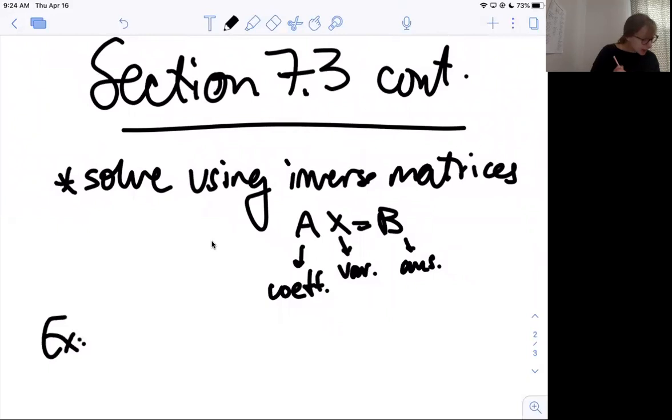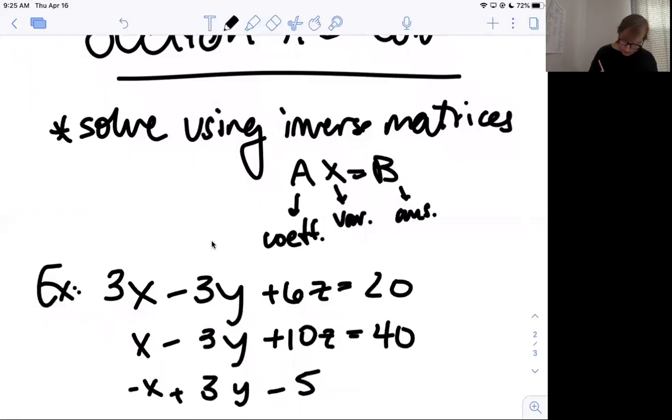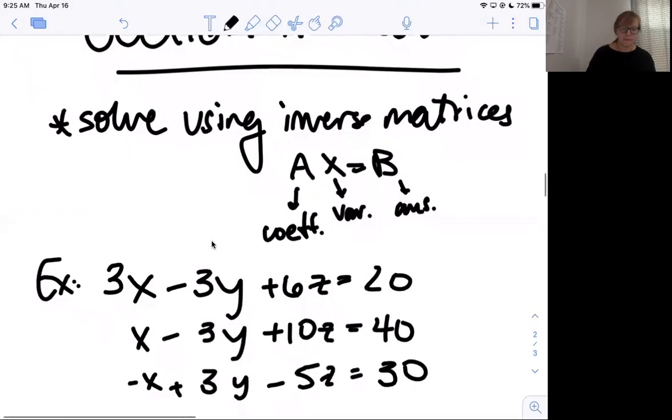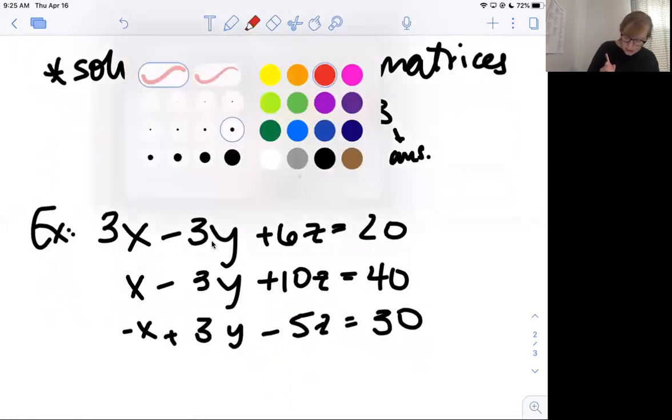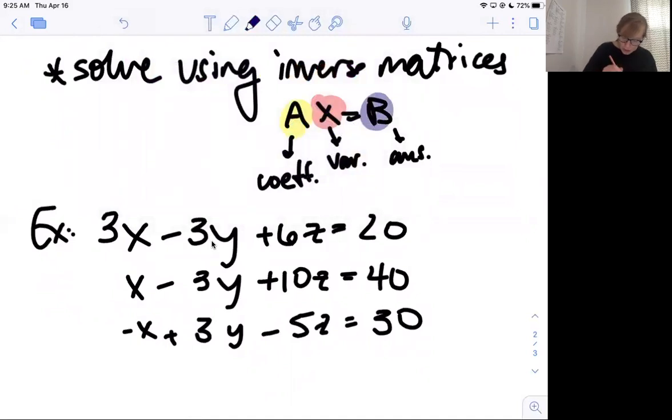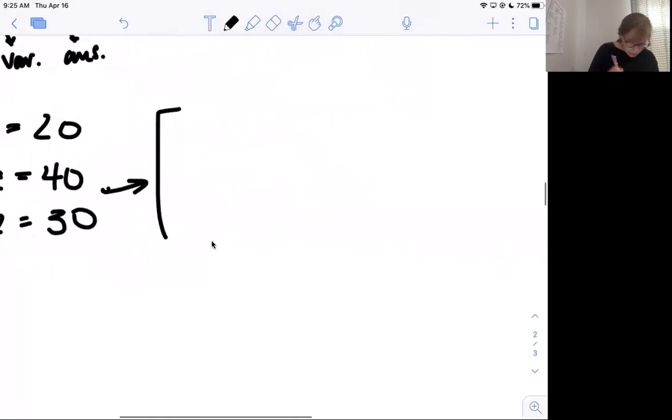So if I'm going to do an example, I would give you something like 3X minus 3Y plus 6Z equals 20, X minus 3Y plus 10Z equals 40, and negative X plus 3Y minus 5Z equals 30. We'd have to write our matrices of A, of X, and of B. So my coefficients were 3, 1, negative 1, negative 3, negative 3, negative 3, 3, 6, 10, negative 5.